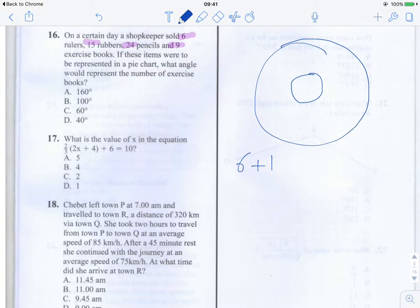So 6 plus 15 plus 24 plus 9. So 6 plus 24 is 30. Add 15 plus 9. That is 24. And 24 plus 30 is 54. So the total of 54 items that are sold on that day.